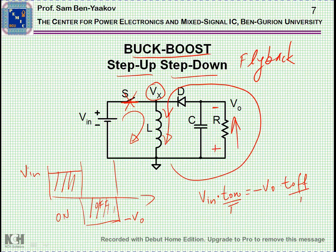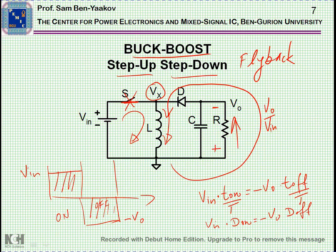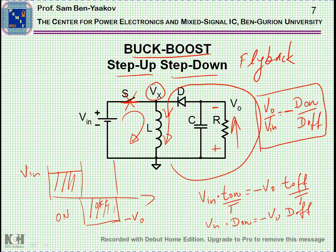So we get V out times T off. Writing it here: V out over V in is minus D on over D off.